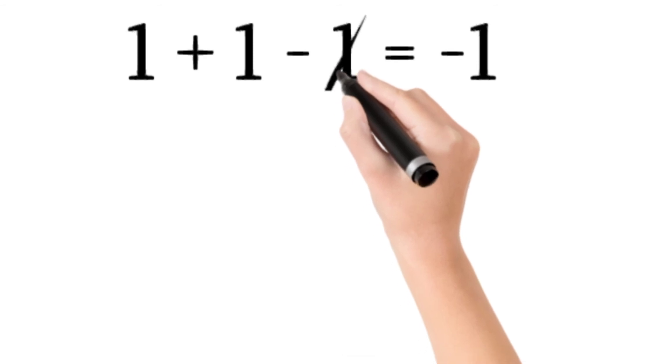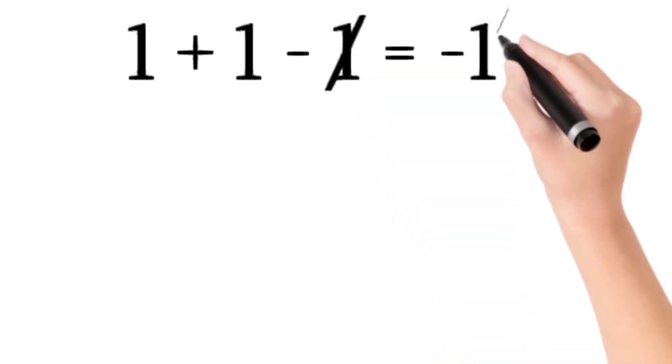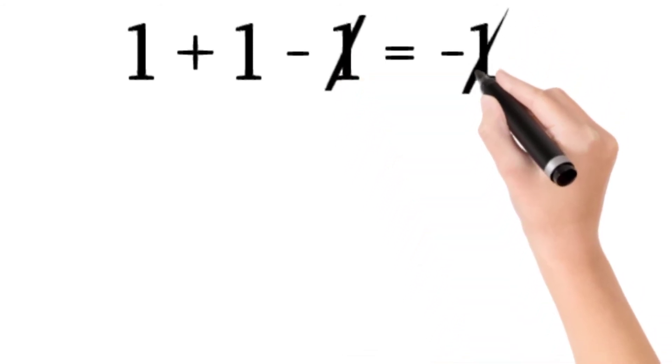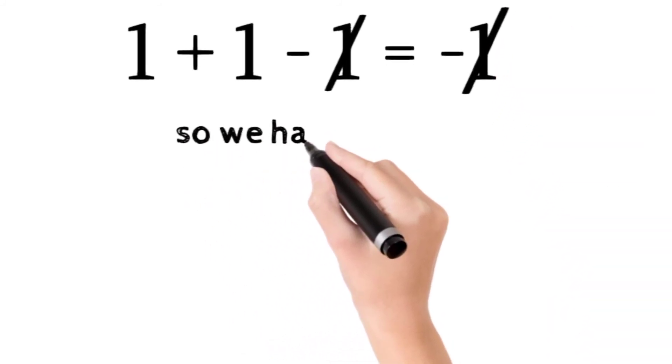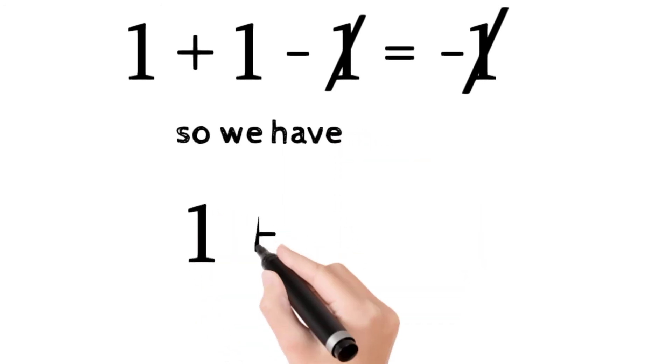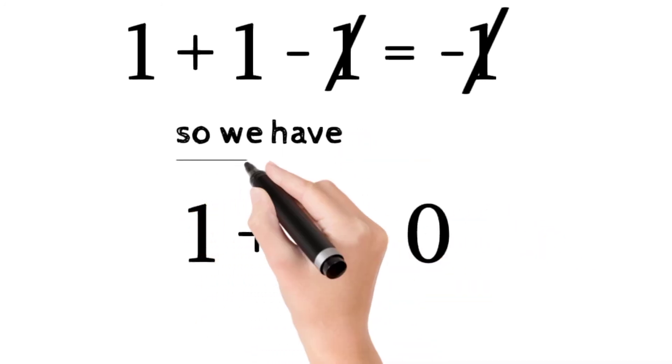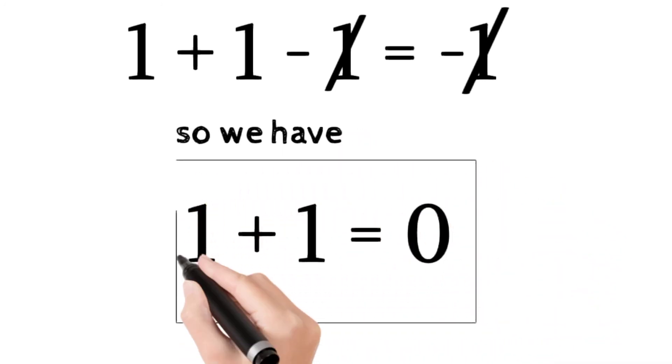And as we know, -1 and -1 cancel each other, and we get 1 + 1 = 0. That's the proof! We can prove that 1 + 1 = 0.